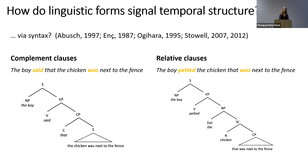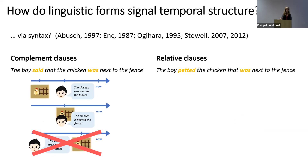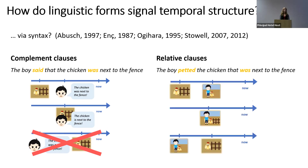One theoretical account argues we can derive temporal structure from syntax. Looking at structural trees, complement clauses are arguments of the verb phrase describing the speech act, whereas relative clauses are adjuncts of nouns. Since adjuncts, unlike arguments, are not mandatory and do not complete the meaning of the constituent they attach to, this structural difference has major consequences for temporal interpretations. In complement clauses, the embedded event of the chicken being next to the fence can never happen after the boy talks about it, whereas in relative clauses all three logical possibilities — prior, simultaneous, or after the petting event — should in theory be possible, as long as both events remain past relative to utterance time.